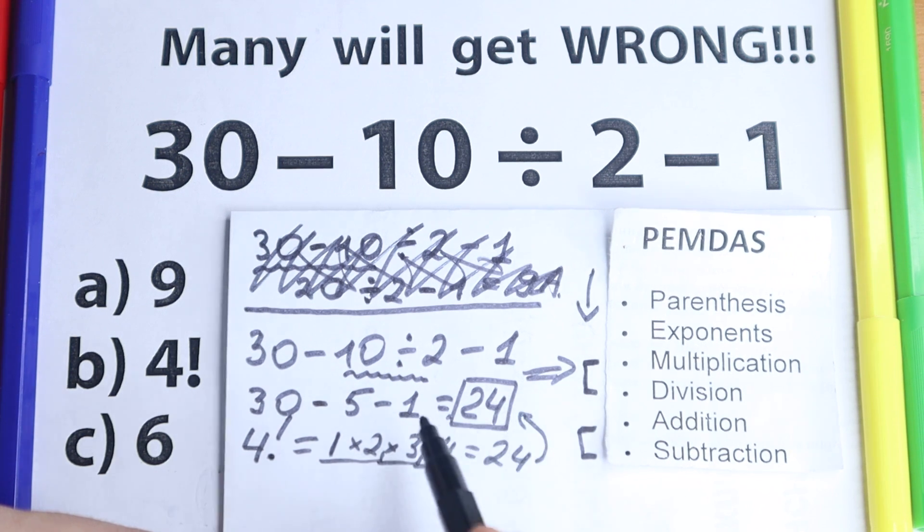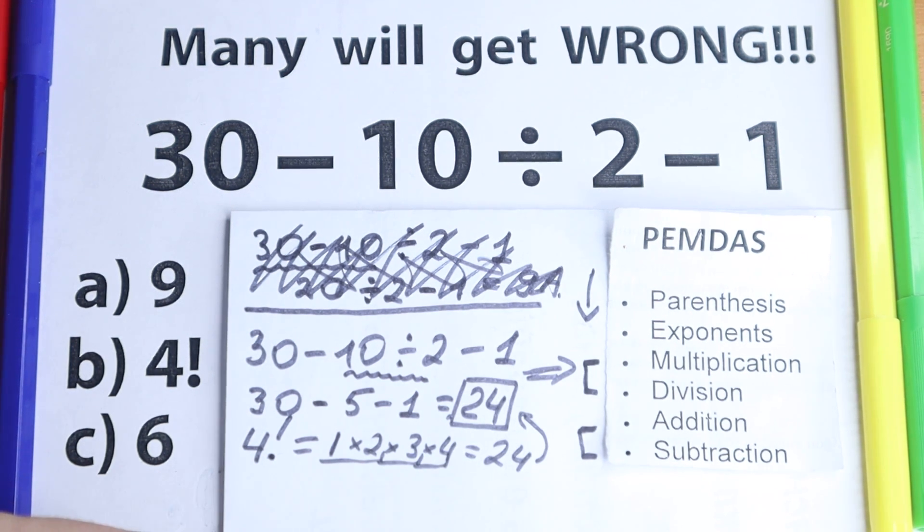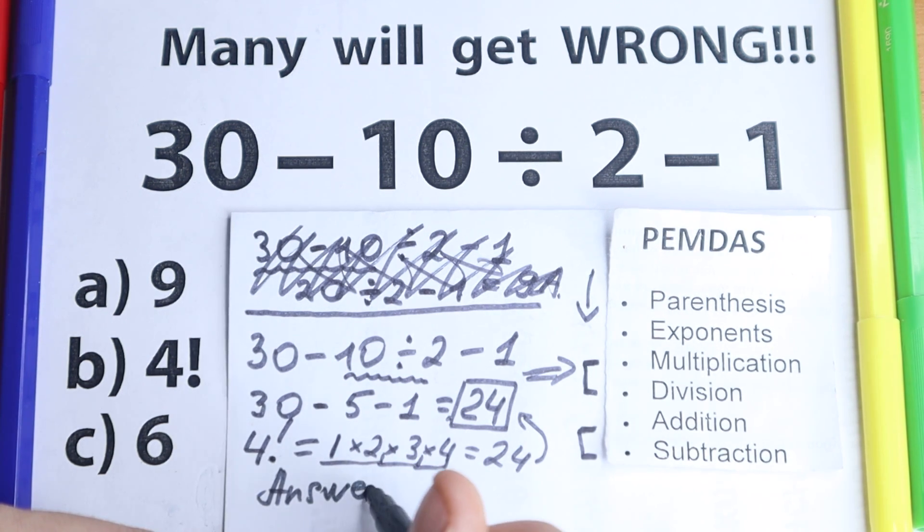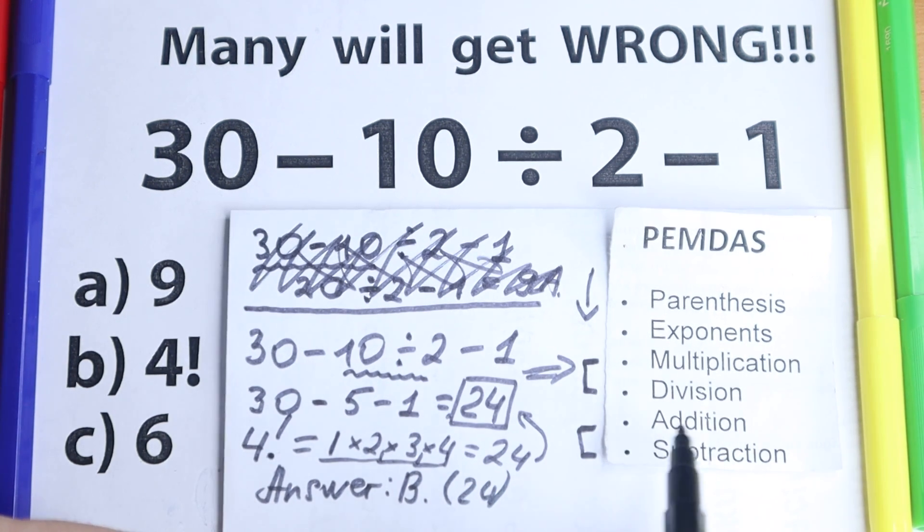So as you can see, 4 factorial is the same as 24, and a correct answer according to PEMDAS is 24. But if you're talking about an option, a correct answer is option B. So our answer is option B, 4 factorial, or if you're talking about PEMDAS is 24.